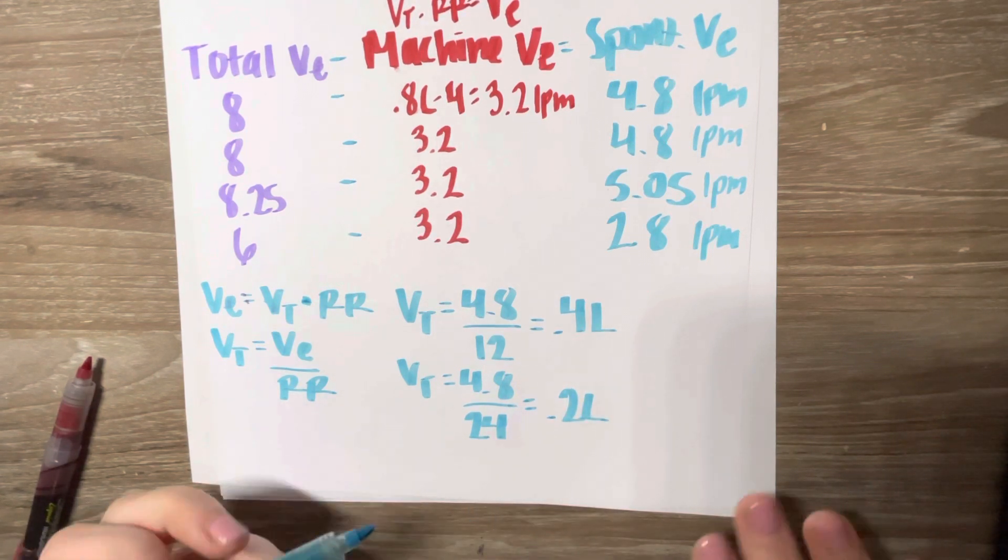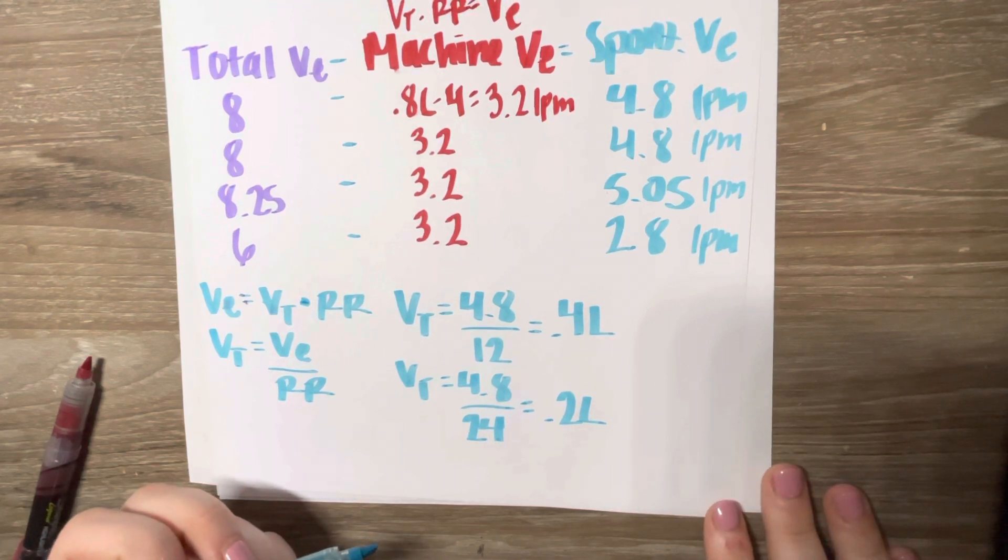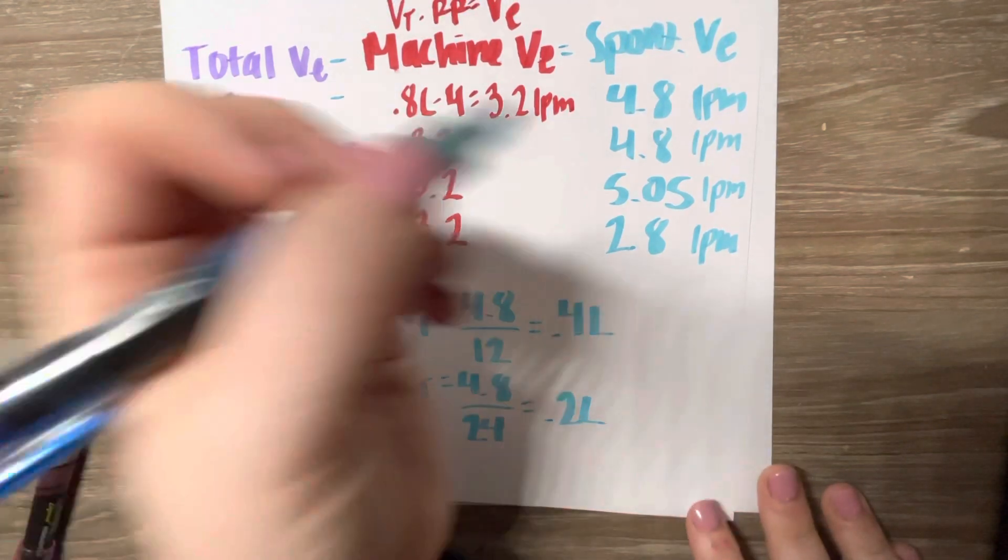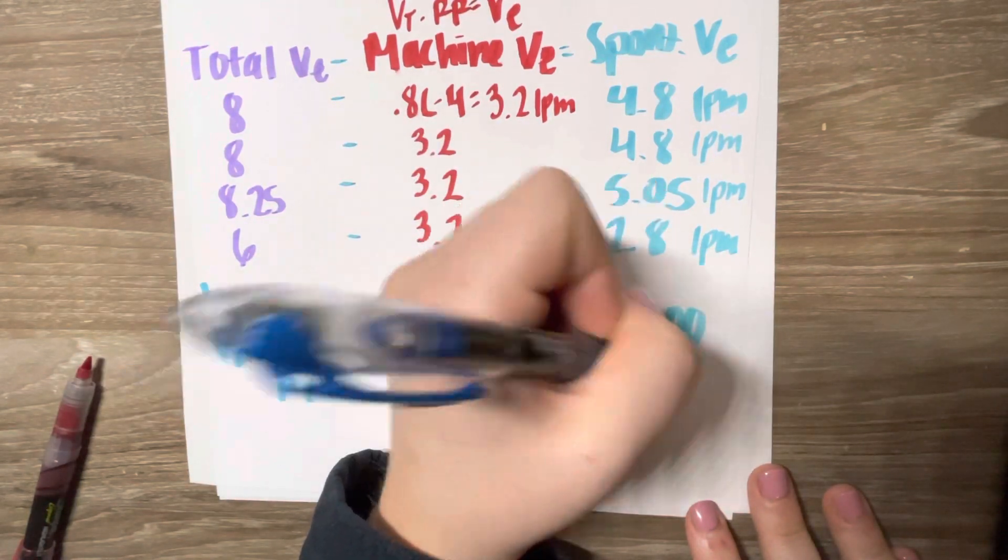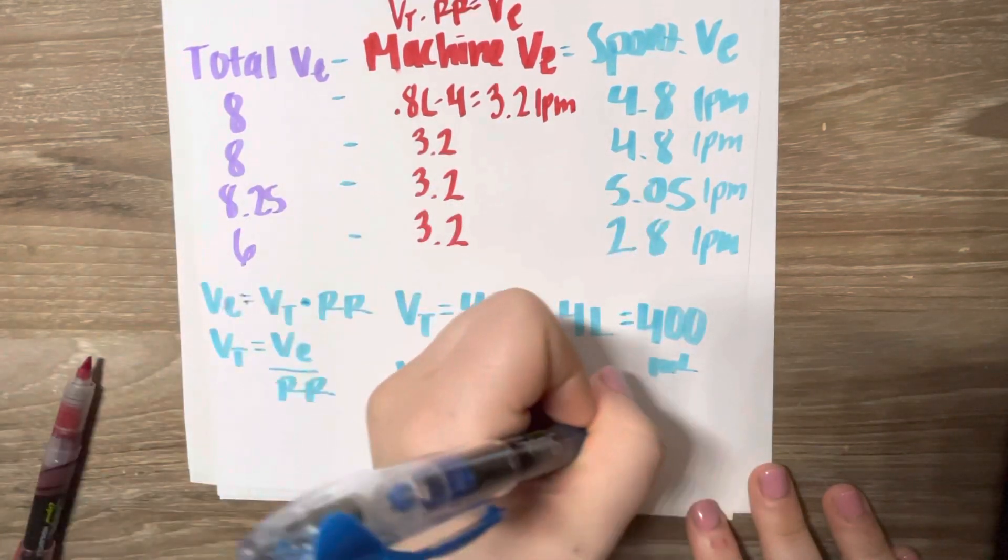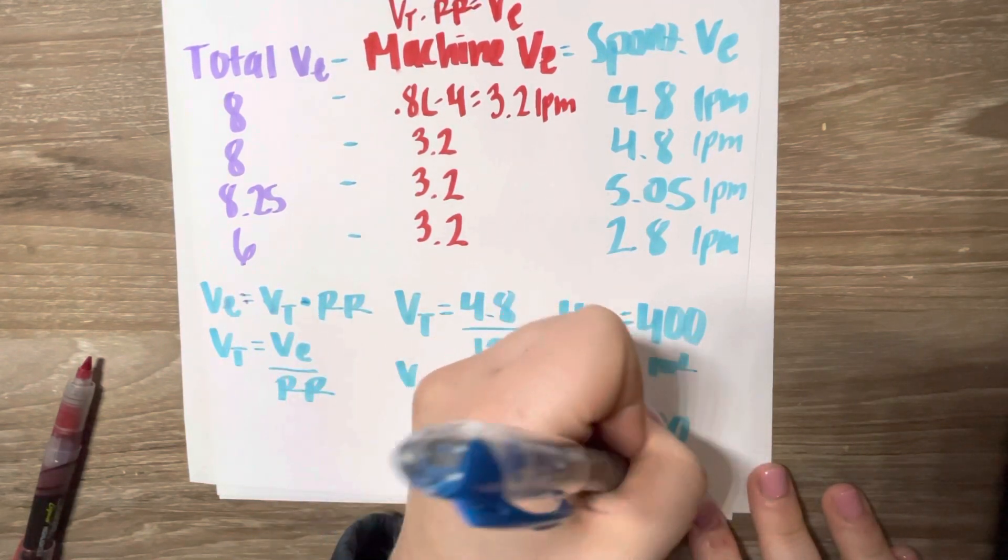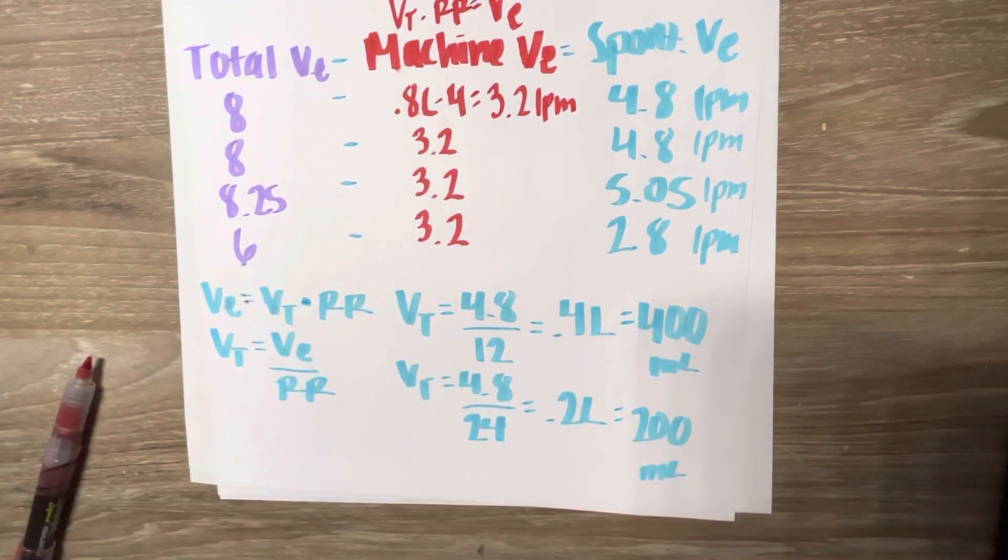And we can convert this back to milliliters because generally on a ventilator, the tidal volume is in milliliters. So this would be 400 mL. This is 200 mL. We're just moving the decimal place over three times.